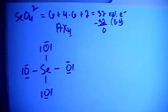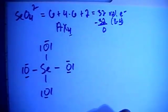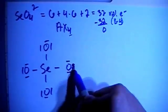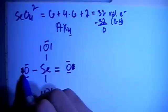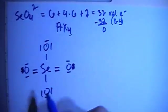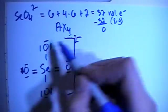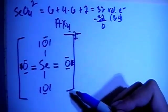However, if you were to check the formal charges, you're going to have a plus 2 on the selenium right now, and you don't want to have anything that's that far from 0. So what we're going to end up doing is moving this pair of non-bonding electrons and forming a double bond here, and this pair of non-bonding electrons and forming a double bond here. And then don't forget to add in your brackets—this is a 2 minus because it's an ion.